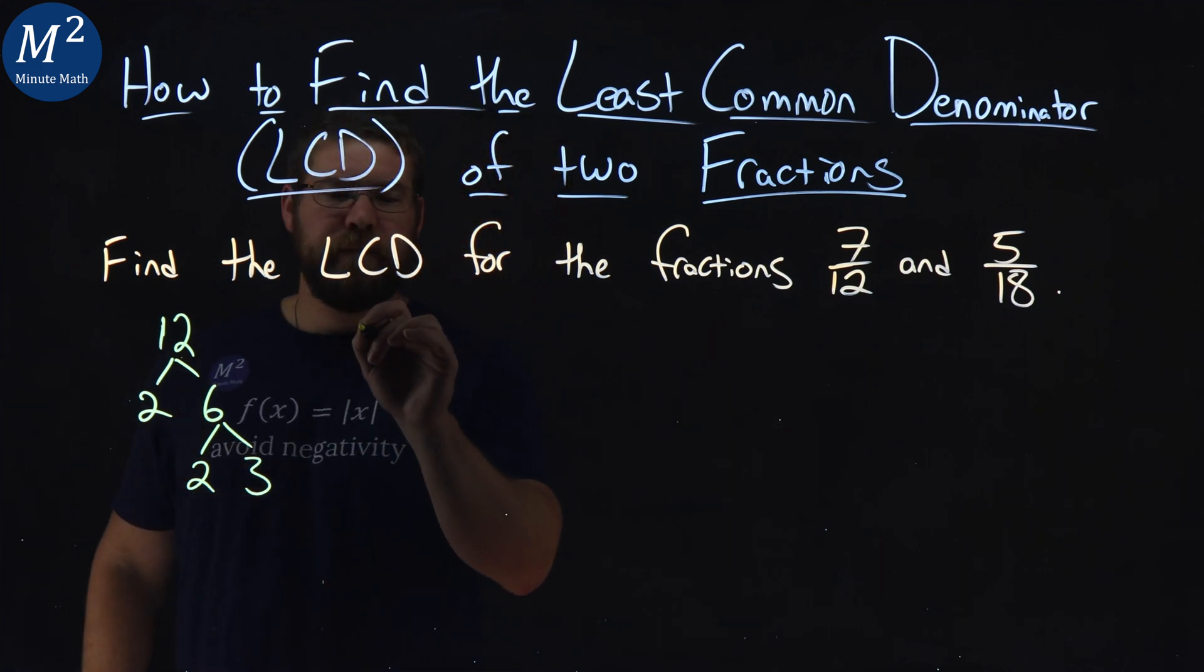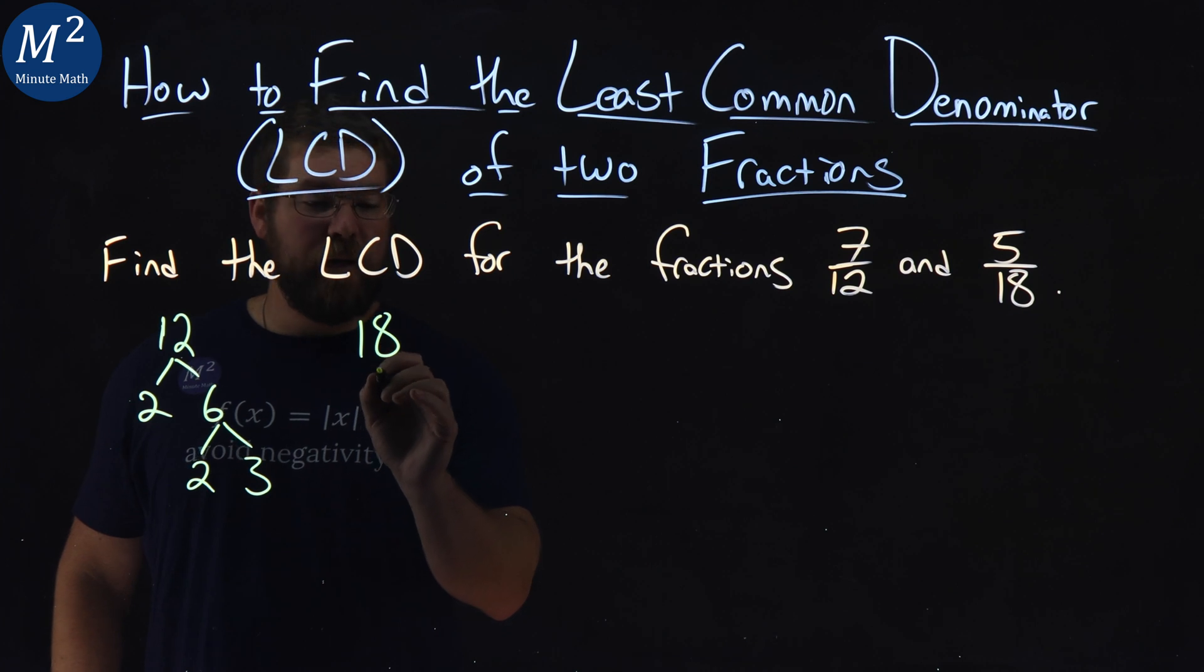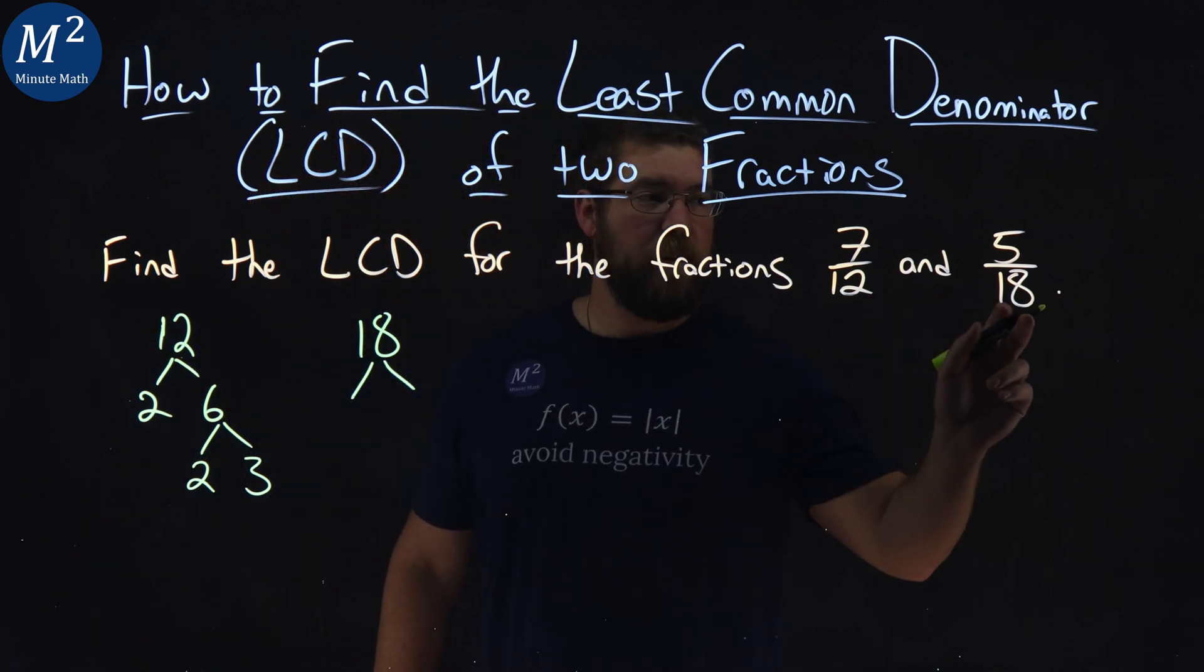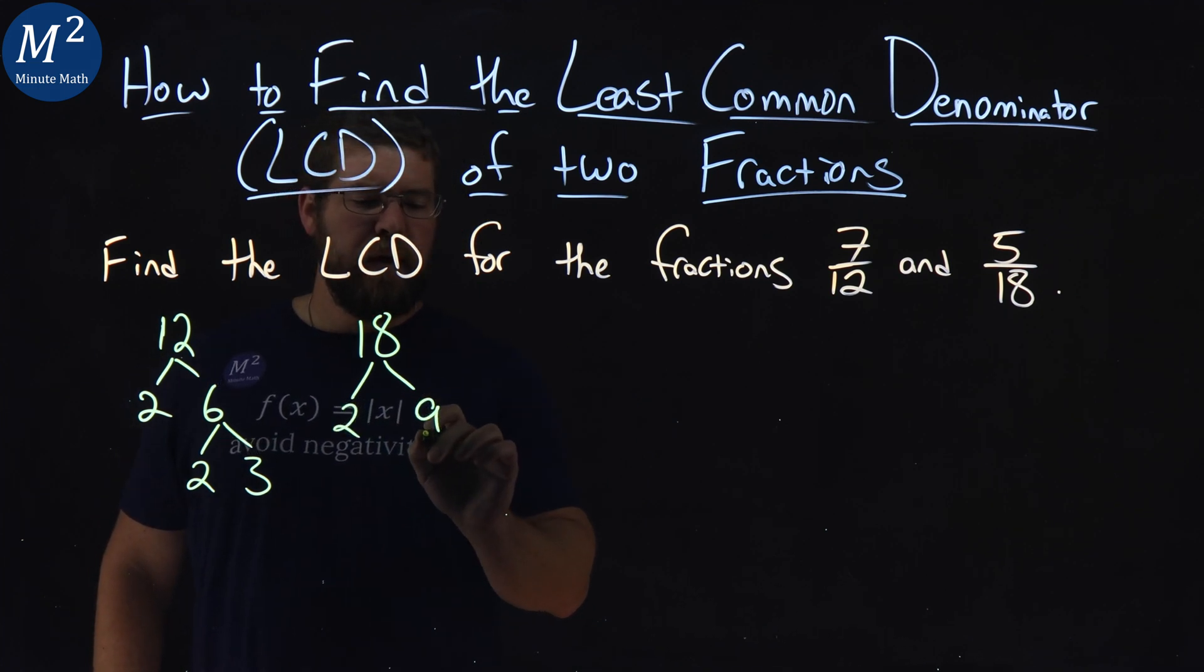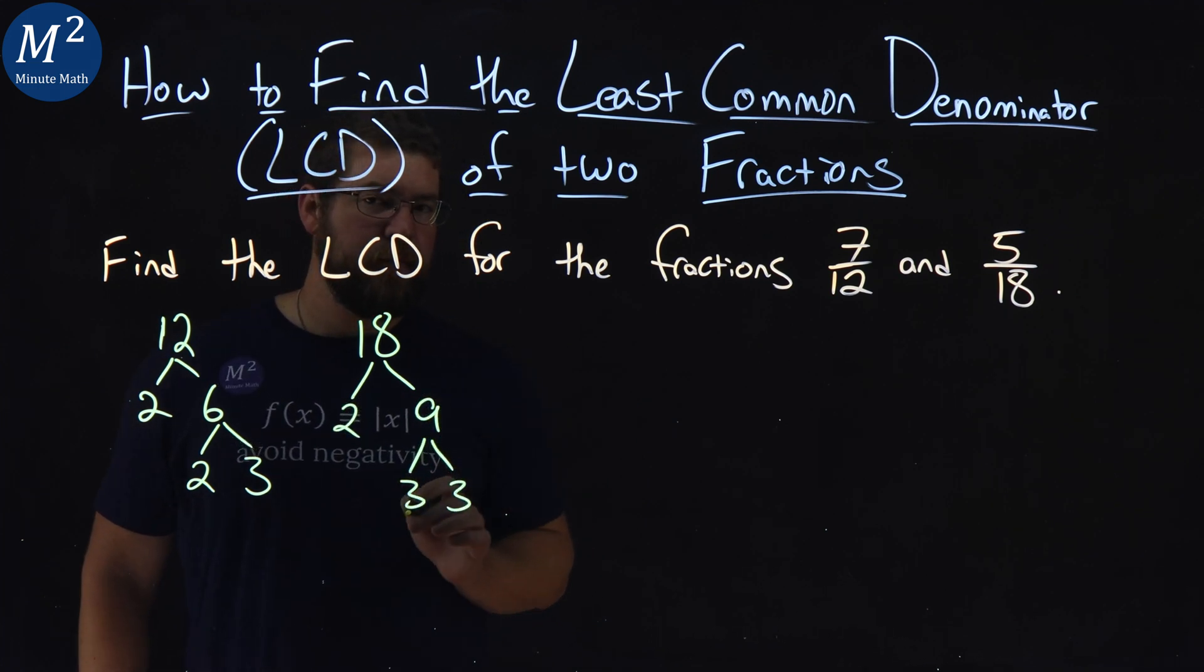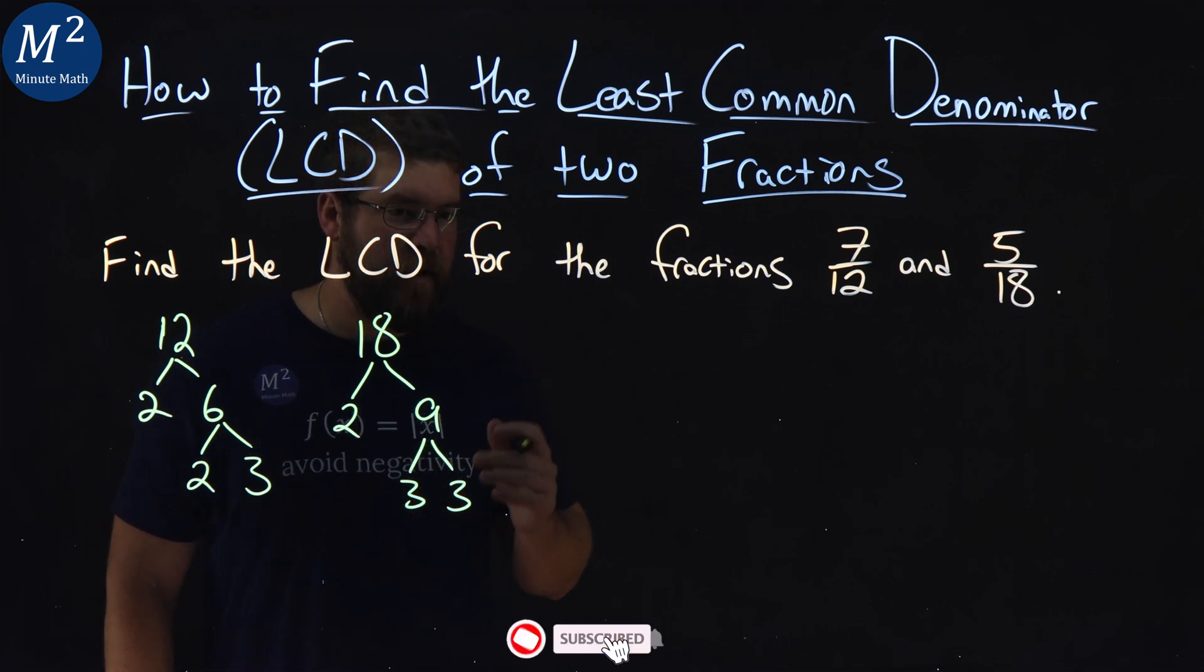What about 18? Same thing, the other denominator. Again, just looking at the denominators. 18 is 2 and 9. And 9 is 3 and 3. From there, we can't break it down anymore.